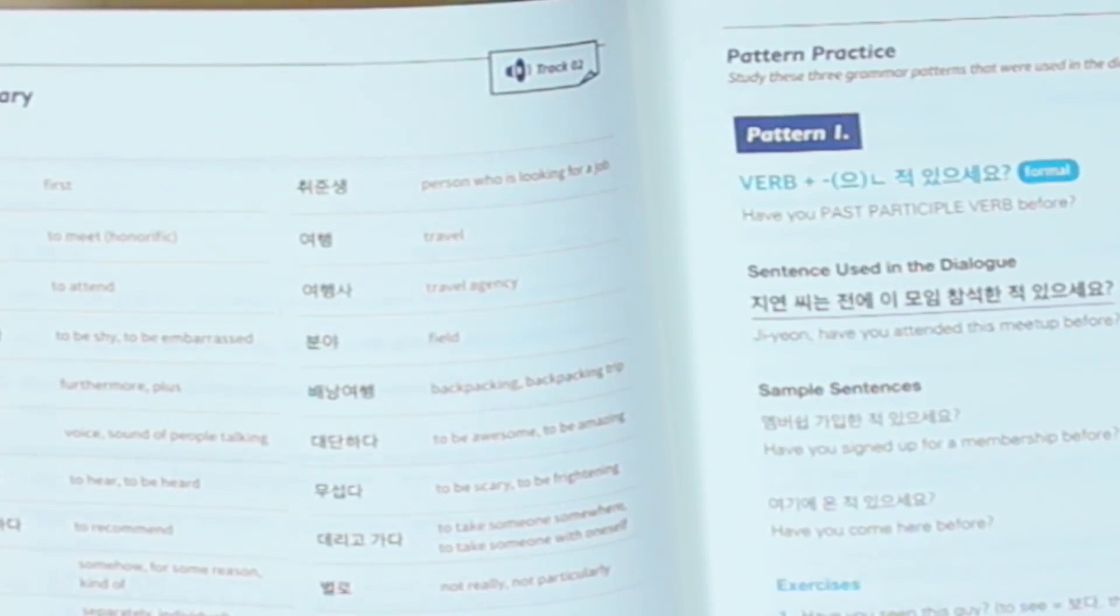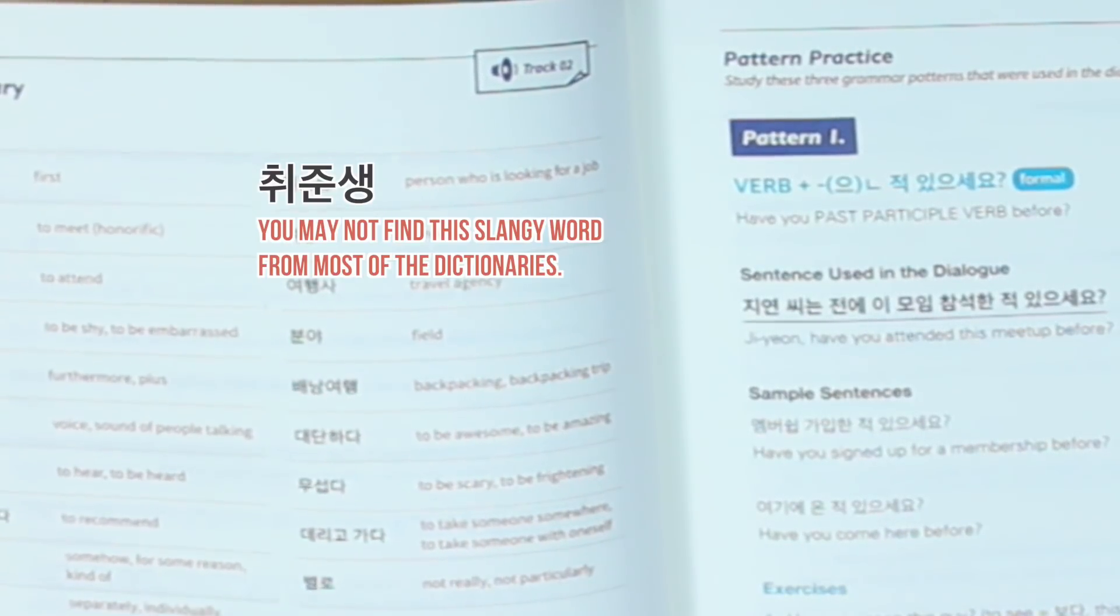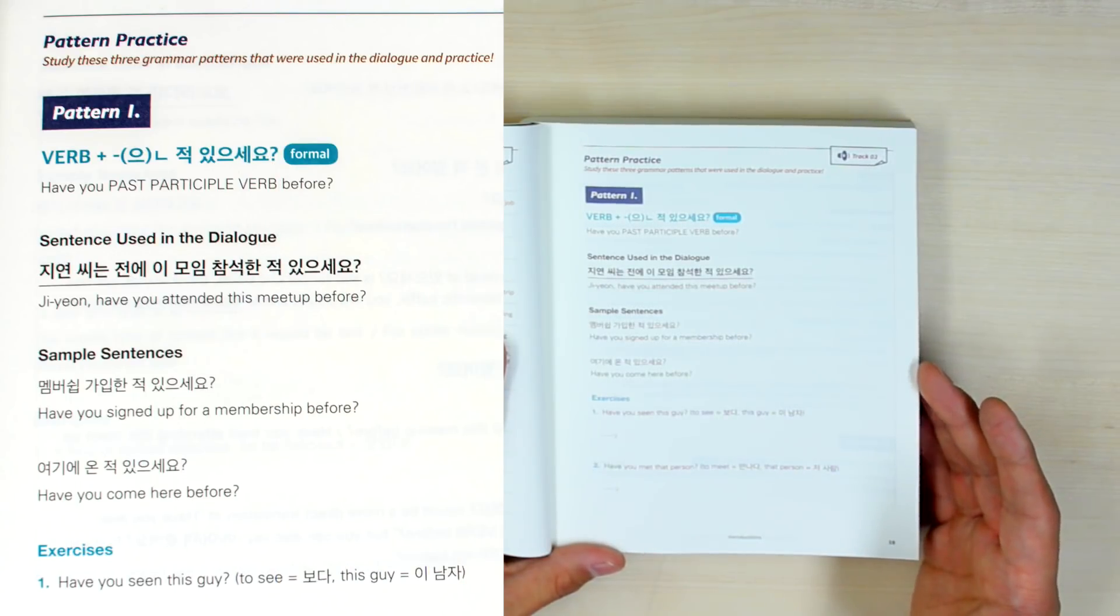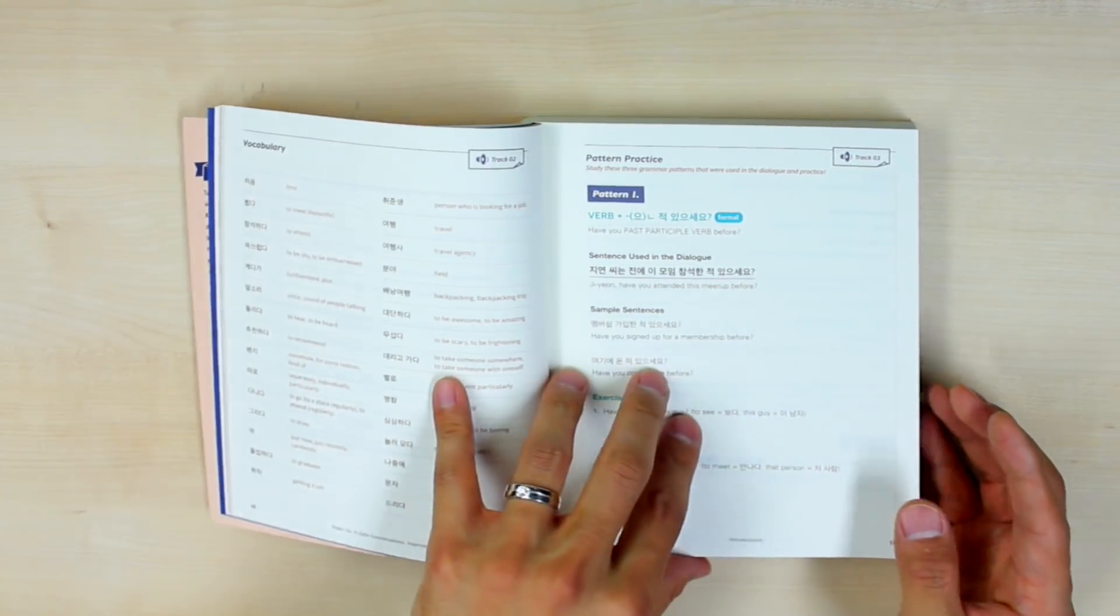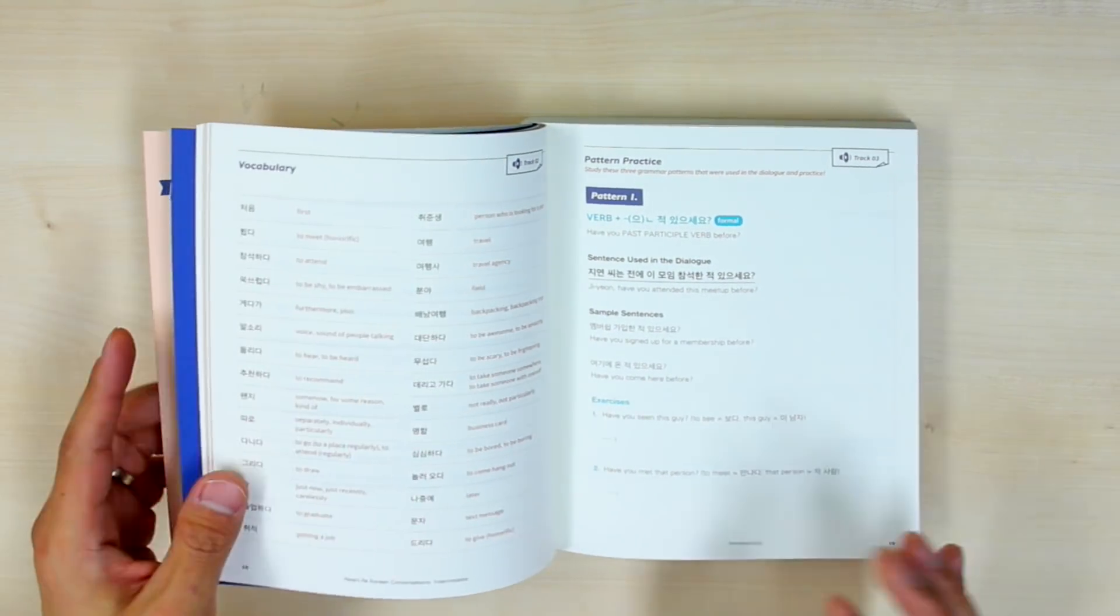Also, like I said, words like 취준생 will probably not be in most of the dictionaries that you use. Anyway, after that, you can see pattern practice. I really love this feature about this book. We have selected three patterns out of each dialogue.